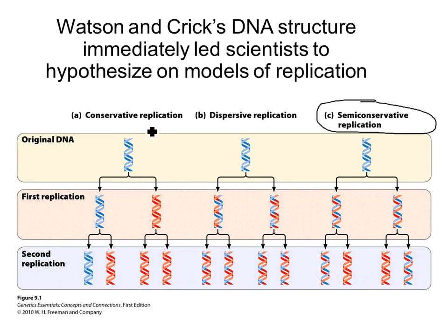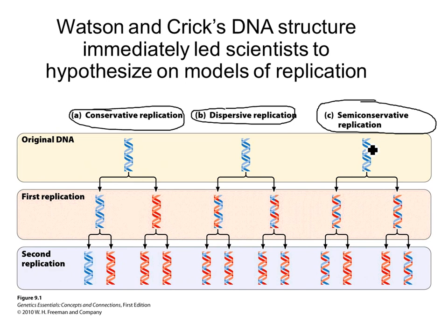You probably know that replication occurs by a model called semi-conservative replication, and that did turn out to be the model that's correct. The semi-conservative model says that you start off with DNA shown all in blue, and after one round of replication, the original double-stranded DNA has been basically unzipped, and each of the blue strands is now part of a new chromosome copy, with a red strand which is the newly synthesized complementary strand.